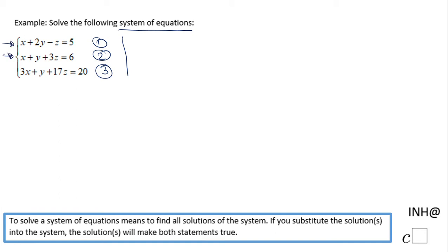That tells me I can eliminate x very easily in these two equations by just subtracting them. Let me copy equation number one: x + 2y - z = 5. And let's copy equation number two: x + y + 3z = 6.